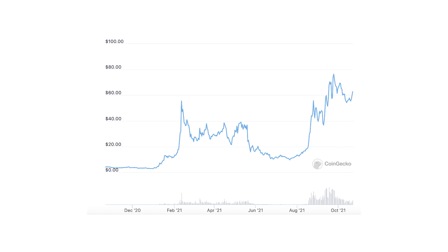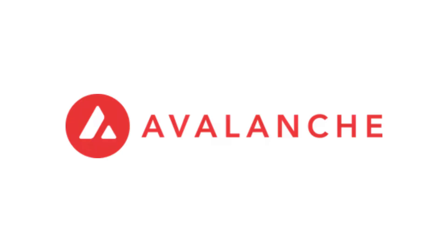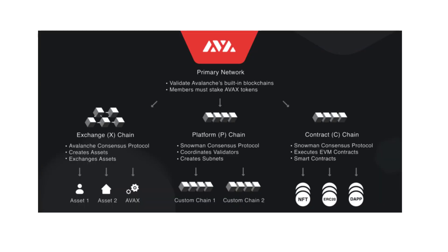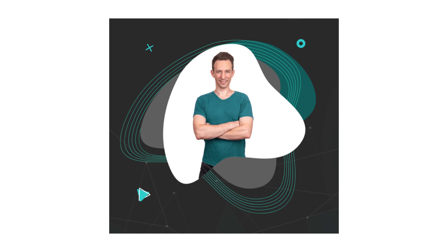Avalanche is a new blockchain that became very popular in 2021. It claims to be a better Ethereum with more transactions per second and lower fees, all thanks to a revolutionary blockchain technology. Is the hype justified, and as a developer, should you pay attention to Avalanche?